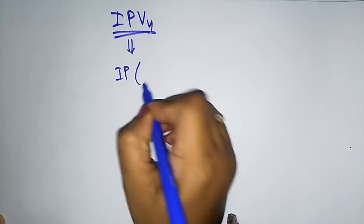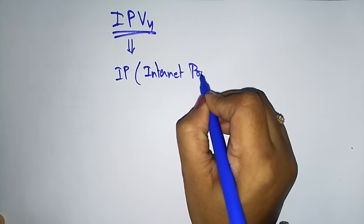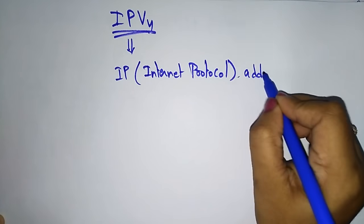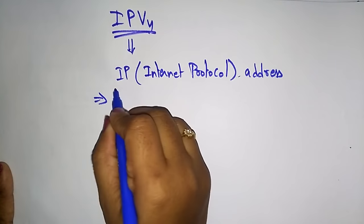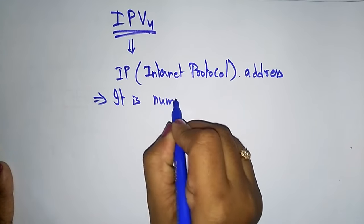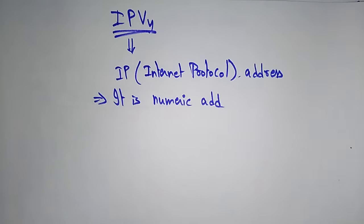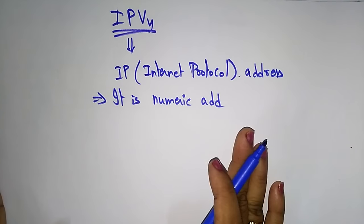We already discussed that IP is nothing but Internet Protocol. It's just an address — to where you want to go and from where we have to get the data. It's completely based on the Internet Protocol Address. It is a numeric address, an identifier for a computer or device on a network.